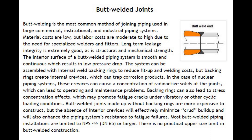The interior surface of a butt welded piping system is smooth and continuous, which results in low pressure drop. The system can be assembled with internal weld backing rings to reduce fit-up and welding costs, but backing rings create internal crevices which can trap corrosion products. In the case of nuclear piping systems, these crevices can cause a concentration of radioactive solids at the joints.